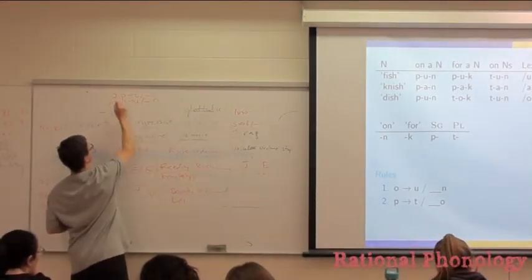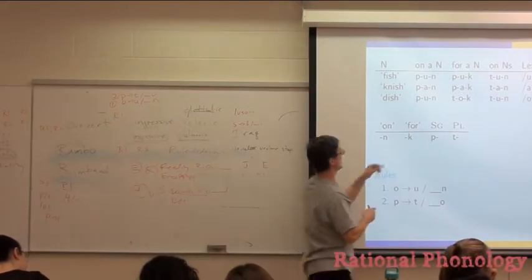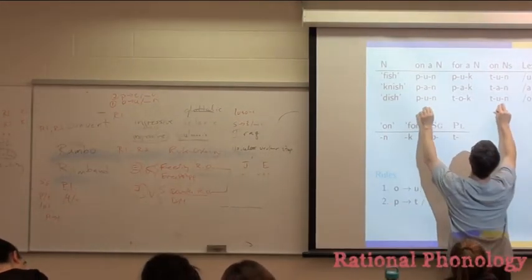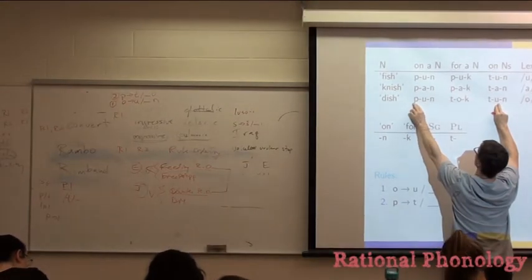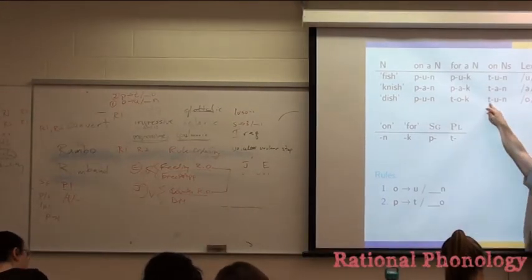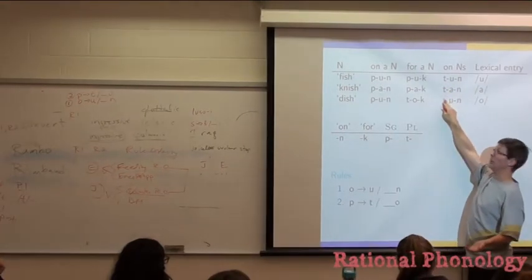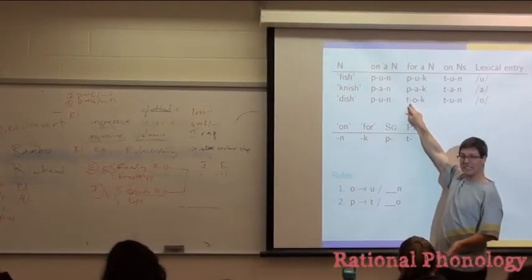So this would be one, two. Right? So if we first do O to U for N, then these will become U's. And then this P doesn't change. Why do we have a T here? Why do we have a T here? It's just the underlying formula, right?